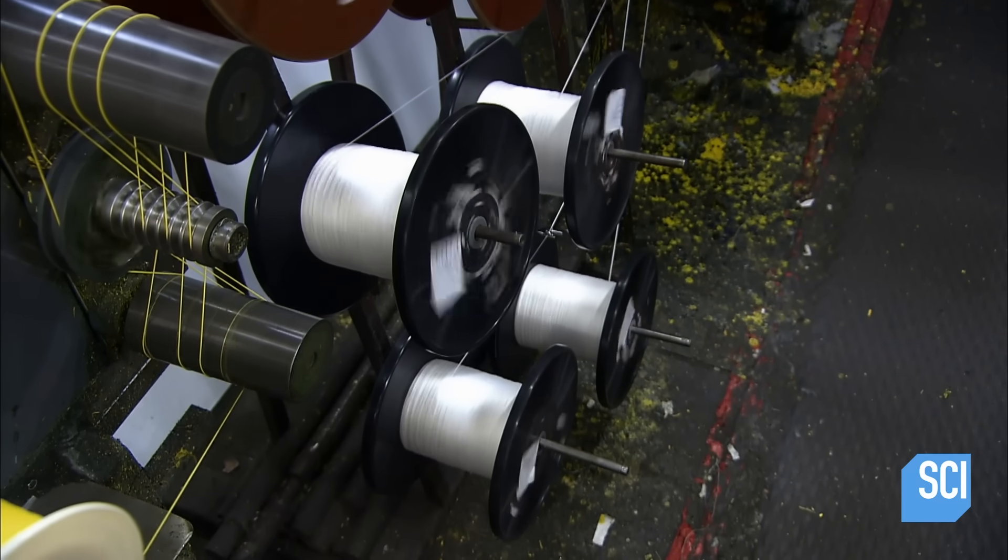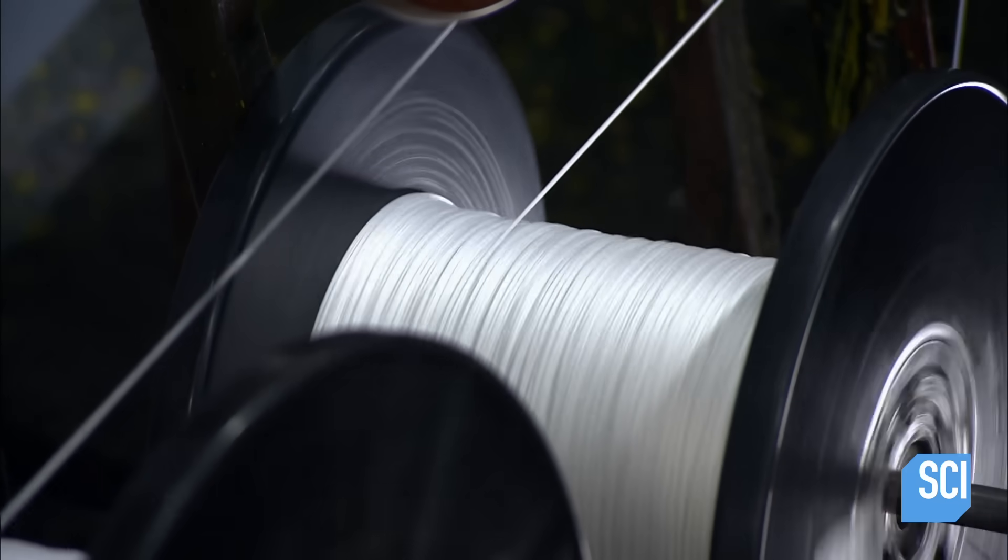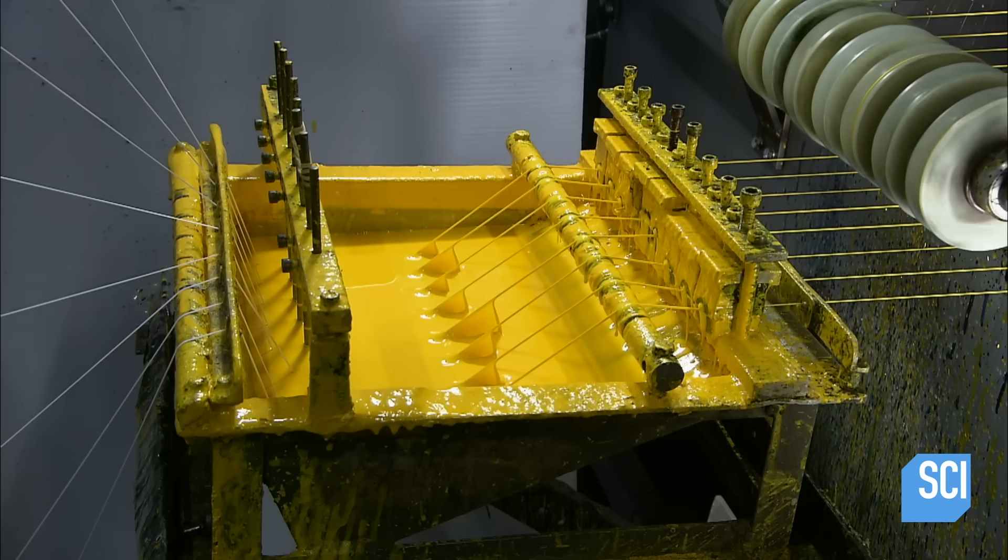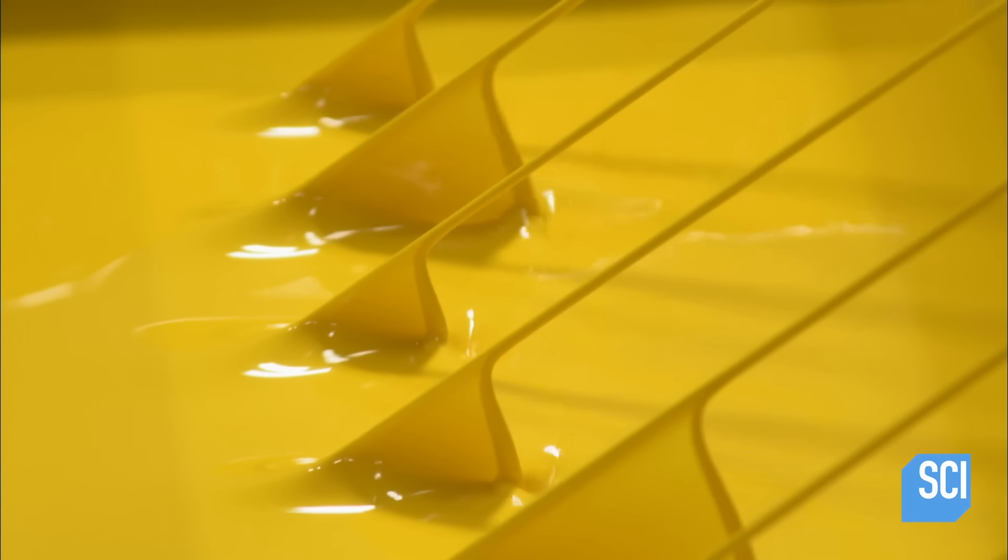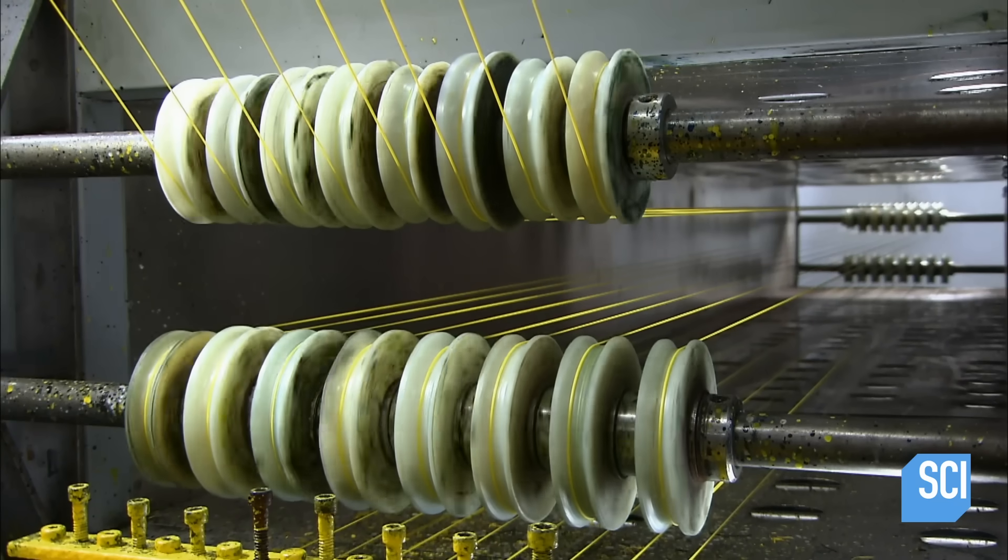These fishing lines go through a different process. They unwind through metal eyelets into a tray of yellow silicone resin. This proprietary resin makes the line abrasion resistant. It will be less likely to break if dragged across a surface like a rock.